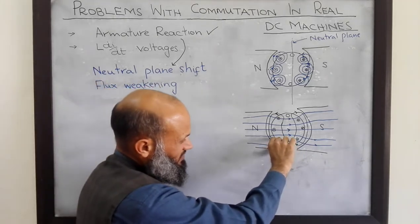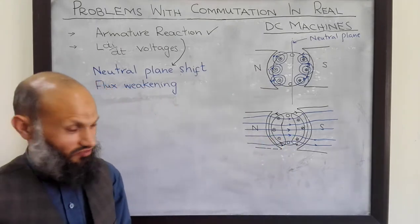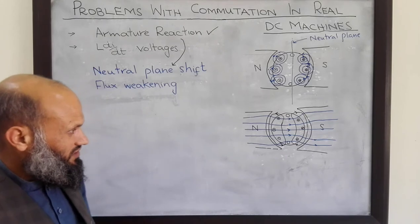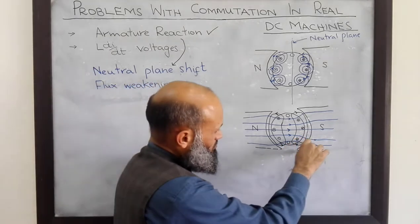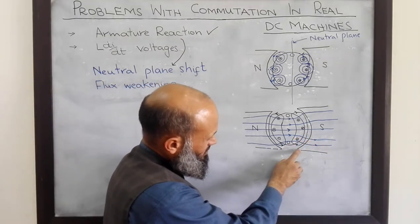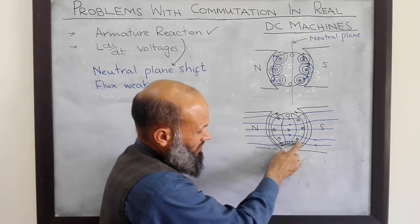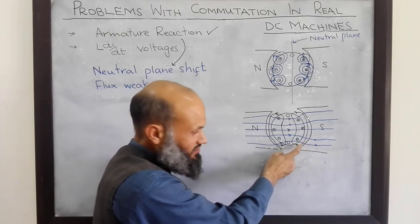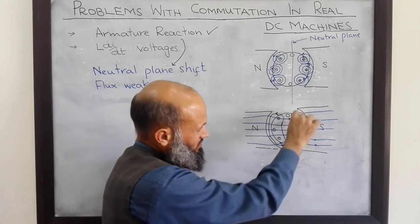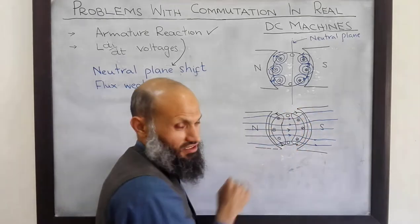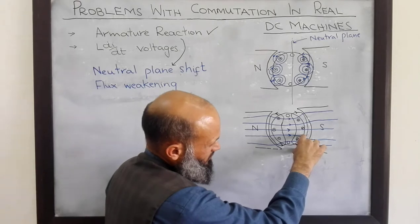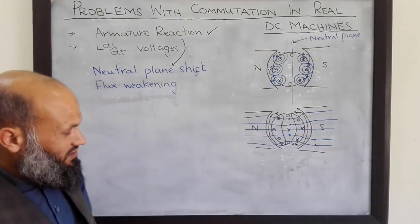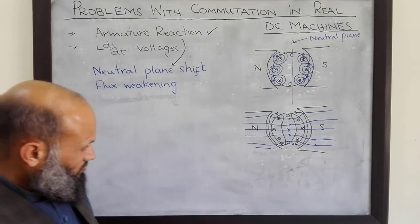Therefore, the net MMF at this end will increase, whereas at this other end the net MMF will decrease. The same situation exists at the other pole: at one end of the north pole, the MMF due to main poles and MMF due to current in the coils are in opposite directions, and at the other end they are in the same direction. So MMF at one end will decrease and MMF at the other end will increase.